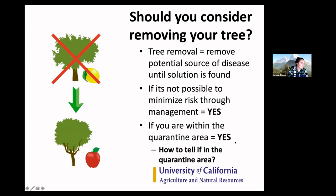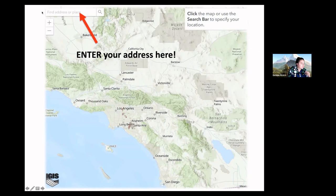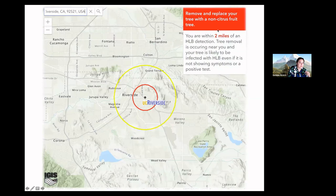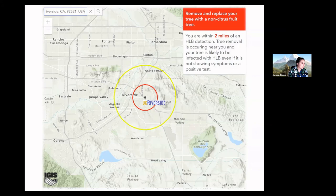We made an app for that. If you go to ucnr.edu/HLB-app, a screen will show up where you enter your address in the top left-hand corner, and it will tell you exactly how far you are from an HLB detection. For example, my office at UC Riverside is technically within two miles of an HLB detection. This is a website you could share with your friends as you introduce them to the idea of what's going on with citrus, so they can type in their address and see how close they are.